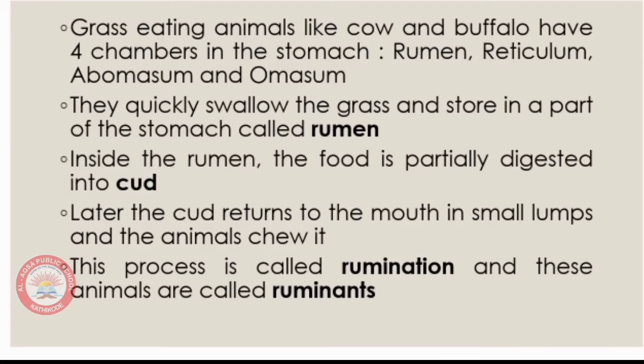Grass-eating animals quickly swallow the grass and store it in a part of the stomach called the rumen. Inside the rumen, the food is partially digested, and this partially digested food is called cud. Later, the cud returns to the mouth in small lumps and the animals chew it.